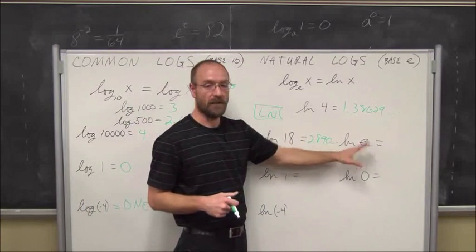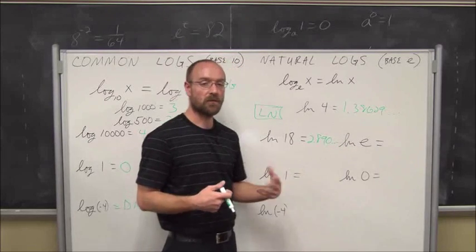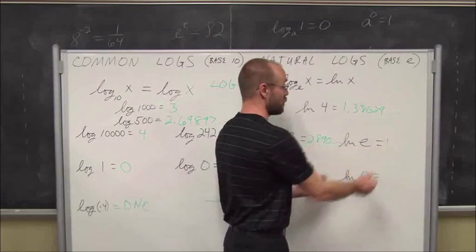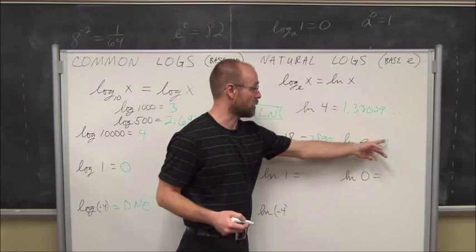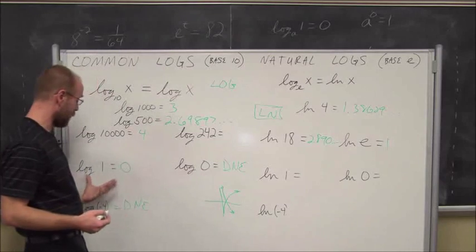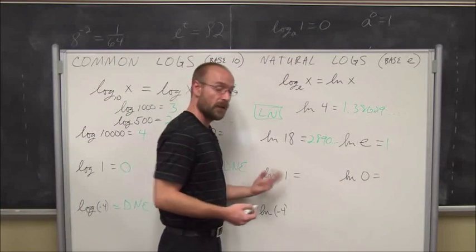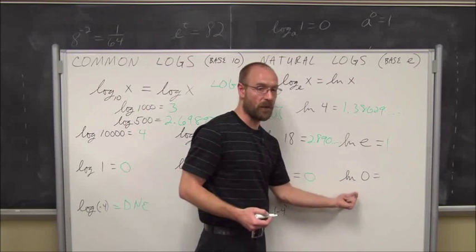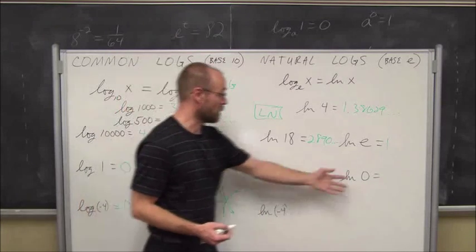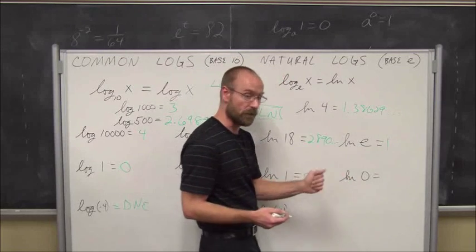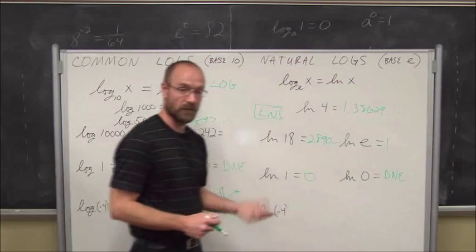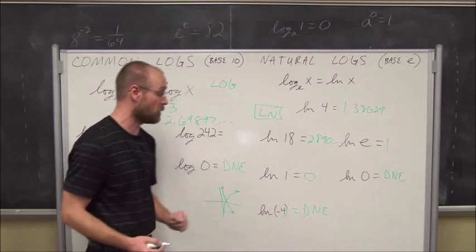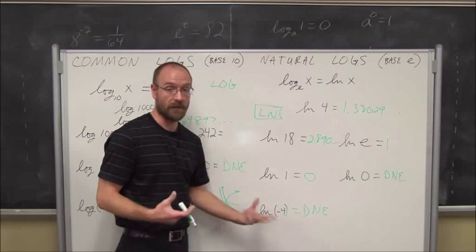Ln of e — identify the base, which is e. This is one of our rules of logarithms: the base is the same as the argument. So e to what power is e? e to the first power is e, so Ln of e equals 1. Natural log of 1 still equals 0, because anything to the 0 power is 1, regardless of the base. Ln of 0 — regardless of the base, that is not in our domain. 0 is our vertical asymptote, which our graph will never cross, so it does not exist. Same thing with Ln of negative 4 — not within our domain. If you plug it into your calculator, it will give you a domain error.